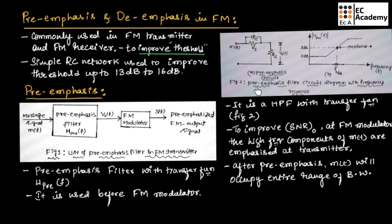Figure 2 shows the pre-emphasis filter circuit diagram with frequency response. This is a simple RC network used as pre-emphasis, and the frequency response shows that this pre-emphasis filter will be acting as a high-pass filter. So we can say the pre-emphasis circuit is a high-pass filter with transfer function as shown in Figure 2.